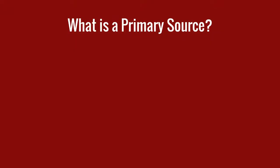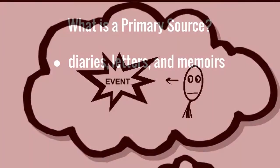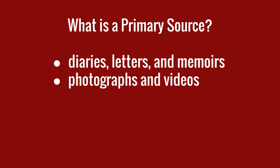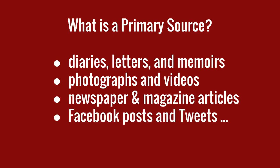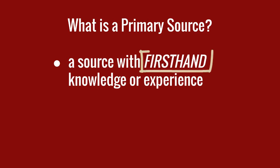A primary source is a first-hand account of an event created by someone who witnessed or experienced it. Examples can include diaries, letters, essays, memoirs, interviews, photographs, videos, and even newspaper and magazine articles, Facebook posts, and tweets, as long as the person composing them has first-hand knowledge of the subject.